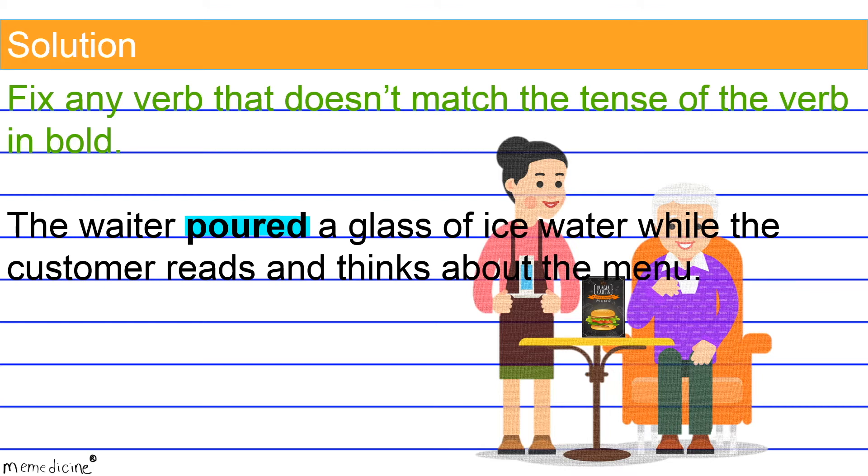the second verb reads and the third verb thinks are written in the simple singular third person present tense verb form. There is no need to reflect a time change. All the verbs should be in the same tense. Shifting the tense of the second and third verbs to their present tense forms is incorrect